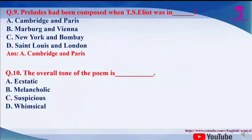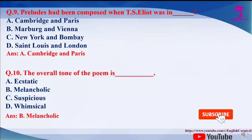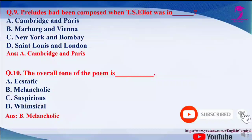Question number ten: the overall tone of the poem is dash. The options are A. Ecstatic, B. Melancholic, C. Suspicious, and D. Whimsical. The correct answer of this question is B, that is melancholic.